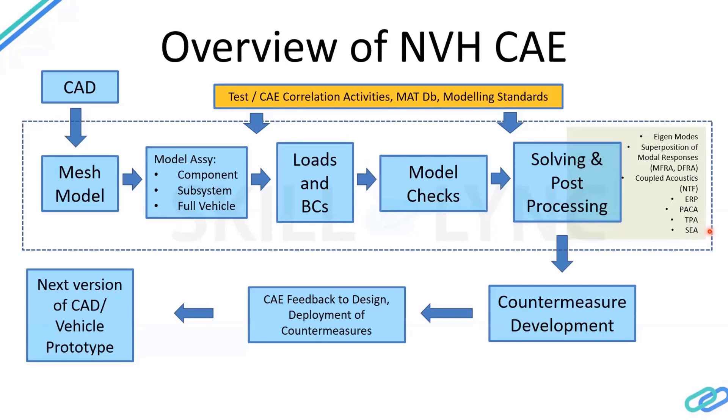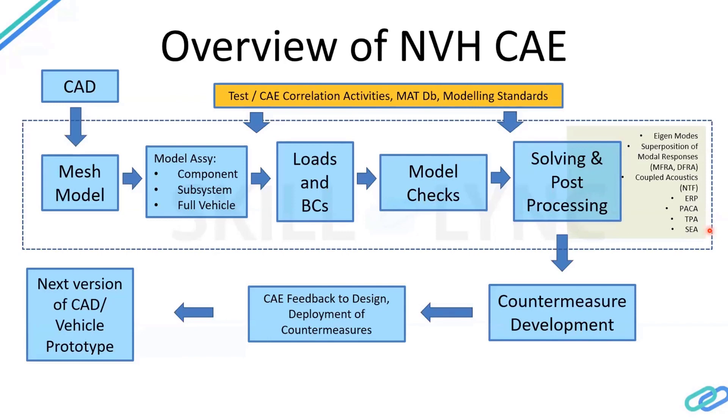We compare those with our targets. Most usually we find many of the metrics that we check are out of target, and then we start our countermeasure development. We try to identify what can we do to solve those problems, how can we make all the metrics up to target. What we do is we make changes in our finite element model and we run the simulation again to understand if we're meeting target.